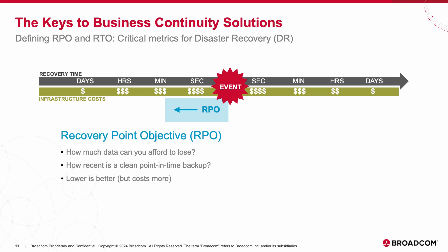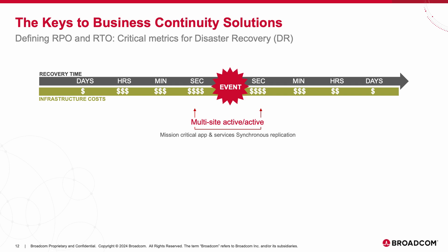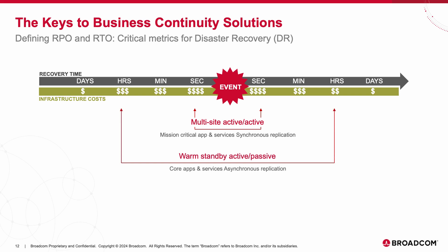While lower RPO values are desirable, they typically come with higher costs. RTO signifies the maximum downtime or service outage a business can afford. It measures how quickly applications can be restarted with clean data accessed from the RPO. While shorter RTO values are preferred, they typically come with higher costs. For a company's mission-critical applications that are hypersensitive to data loss or downtime, where RTO and RPO values are in the range of seconds, DR infrastructure tends to be more expensive, often involving multi-site active-active solutions that provide synchronous replication for mission-critical apps and services.